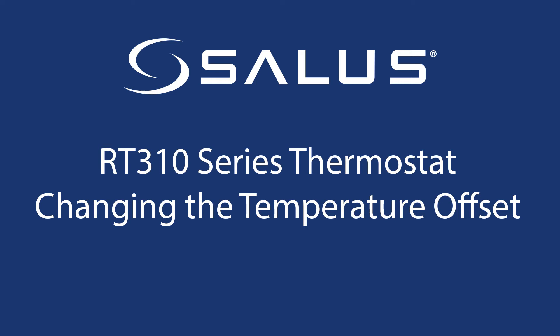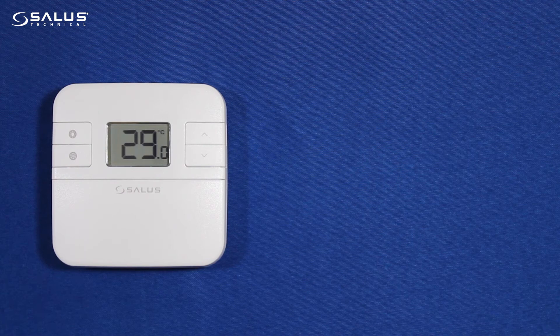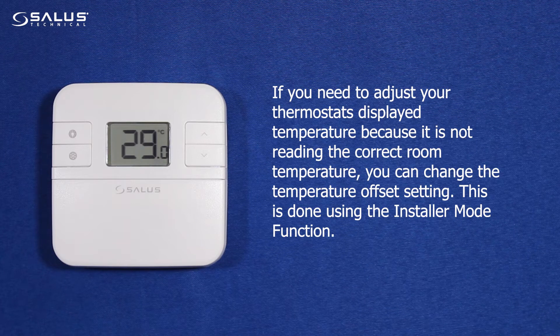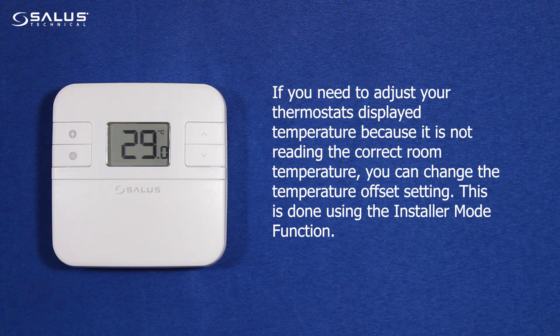RT-310 series thermostat — changing the temperature offset setting. If you need to adjust your thermostat's displayed temperature because it is not reading the correct room temperature, you can change the temperature offset setting. This is done using the installer mode function.